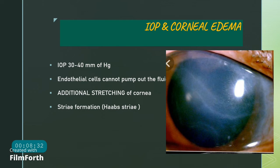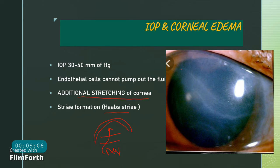Why does corneal edema occur? When IOP rises beyond 30 to 40 mmHg, endothelial cells cannot pump excess fluid out of the cornea. Excessive stretching causes Haab's striae; once a tear develops in Descemet's membrane, aqueous humor can seep into the cornea, further causing corneal edema. The two lines represent the tear in Descemet's membrane with the stroma in between.